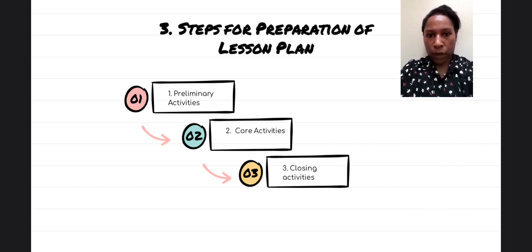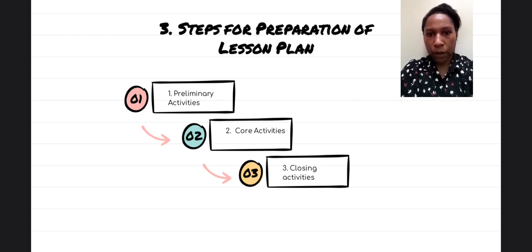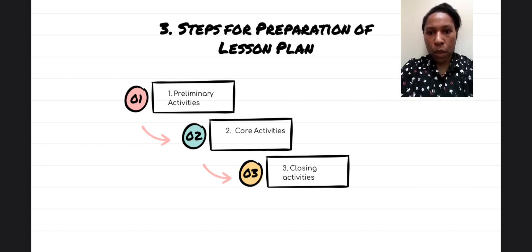The third point is closing activities. Number one: the whole series of learning activities and results — getting direct and indirect benefit from the learning outcomes. Number two: provide feedback on the learning process and outcomes. Number three: carry out follow-up activities in the form of assignments, both individual and group. And the last is to inform the lesson plan for the next meeting.